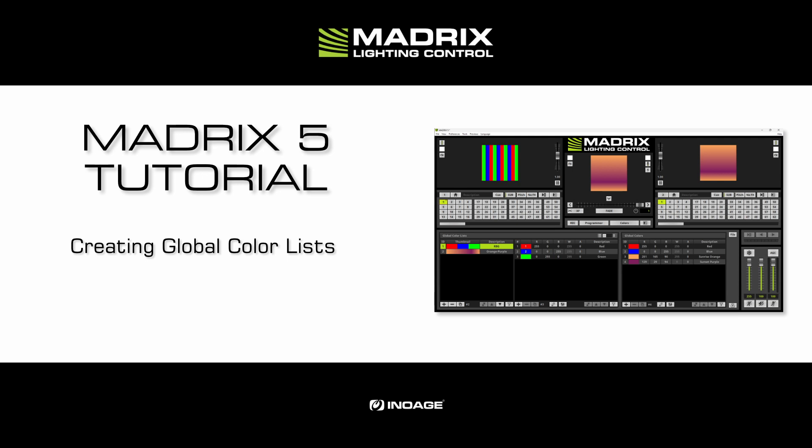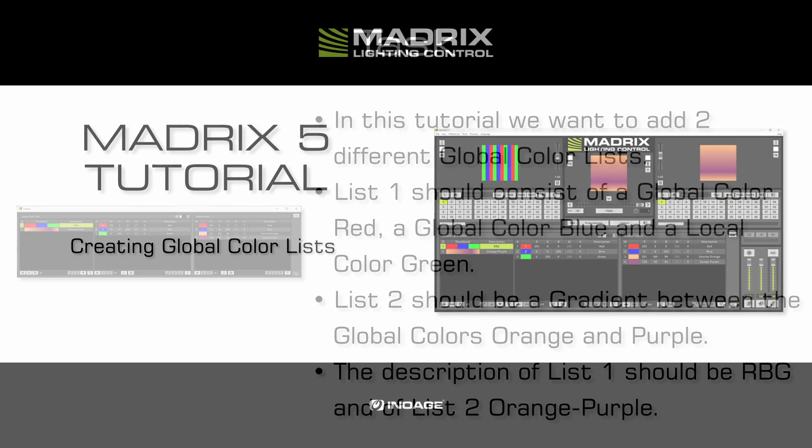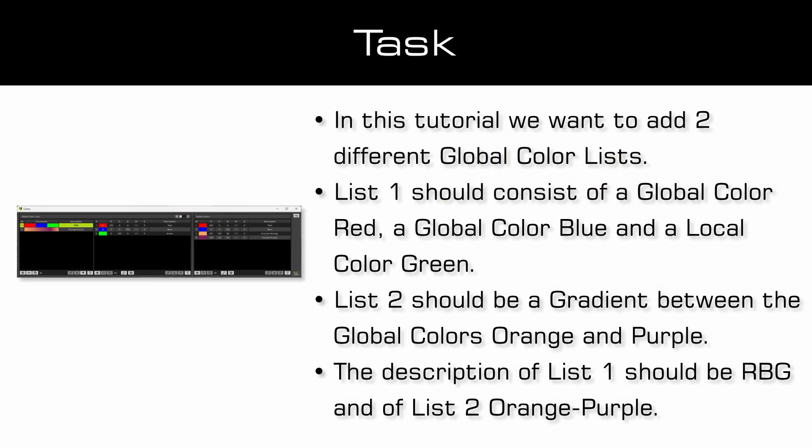In this tutorial we will work with the results of the tutorial adding global colors. As a task we want to add two different global color lists. List 1 should consist of the global colors red and blue and a local color green, and the global color list 2 should be a gradient between the global colors orange and purple.